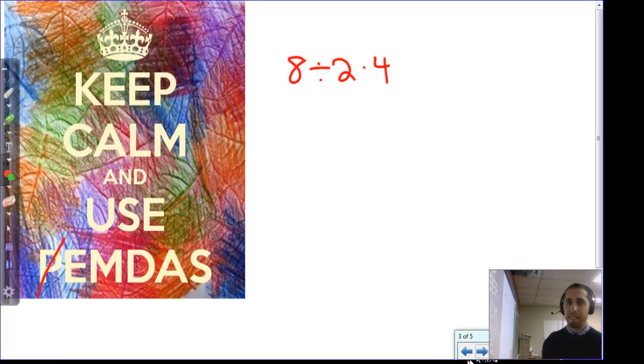But people who are following PEMDAS might do that multiplication first. They would say 8 divided by 8 is 1. That's incorrect. So, that's strike number 2. We know that we do the division first. So, it would be 8 divided by 2 is 4. 4 times 4 is 16.